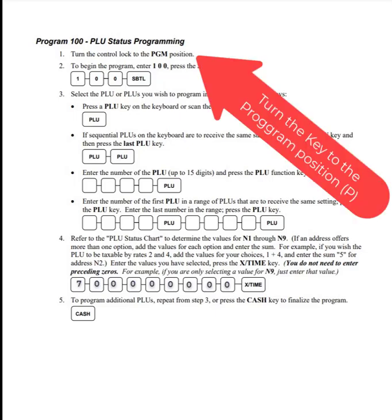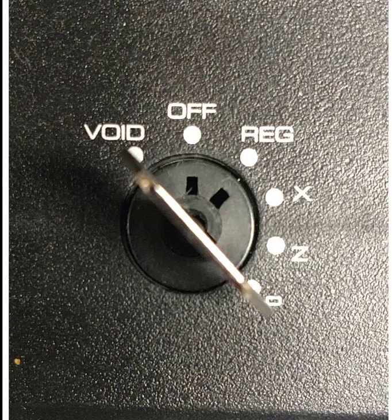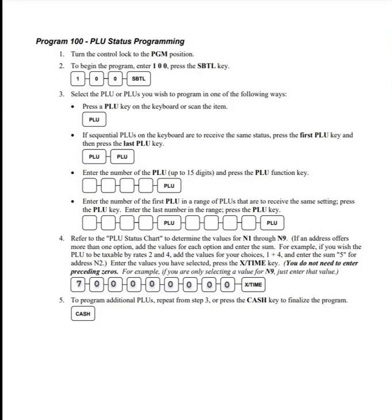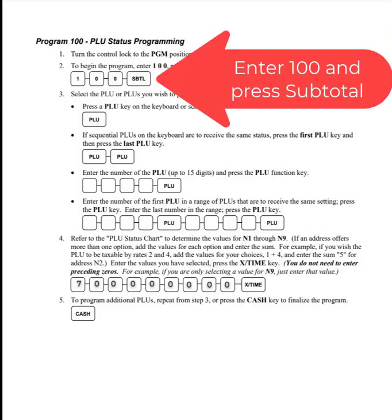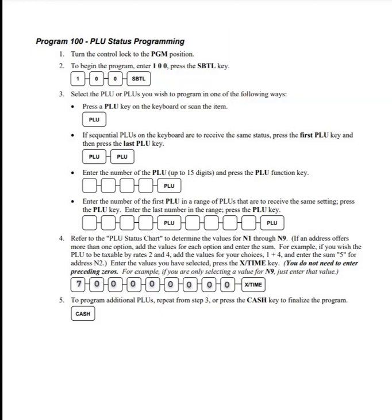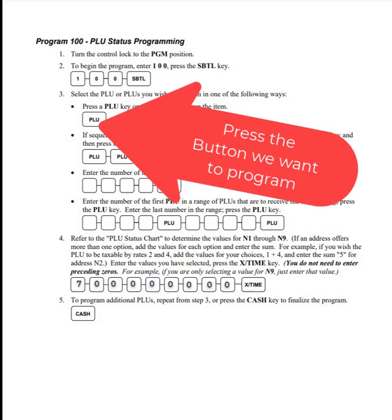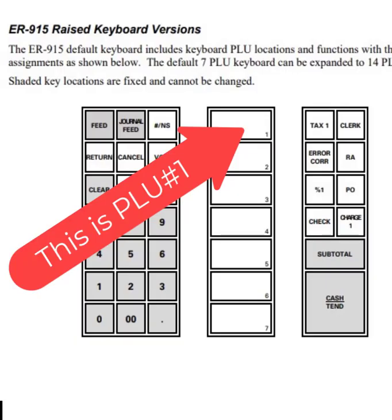We're going to turn the key to the program position, which is the P mode on the mode switch. Here's a picture of it — you can see the P — that is how you put it into program mode. Then we're going to enter 1, 0, 0 on the keypad and press Subtotal. Then we're going to press the button that we want to program — we're going to program PLU number 1. Here's a picture of where it is on the keyboard; it's the top button. So we press that.